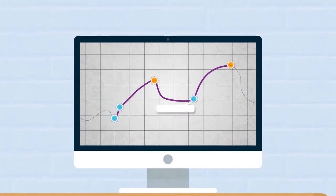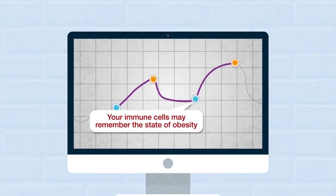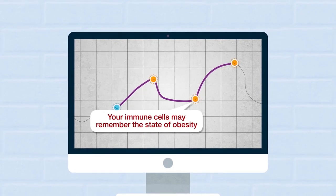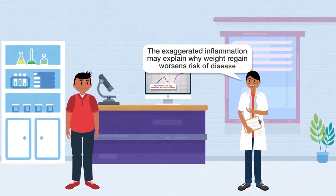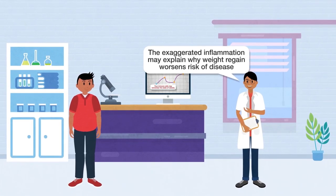These data suggest that your immune cells may remember the state of obesity even after weight loss. The exaggerated inflammation may explain why weight regain worsens risk of disease.